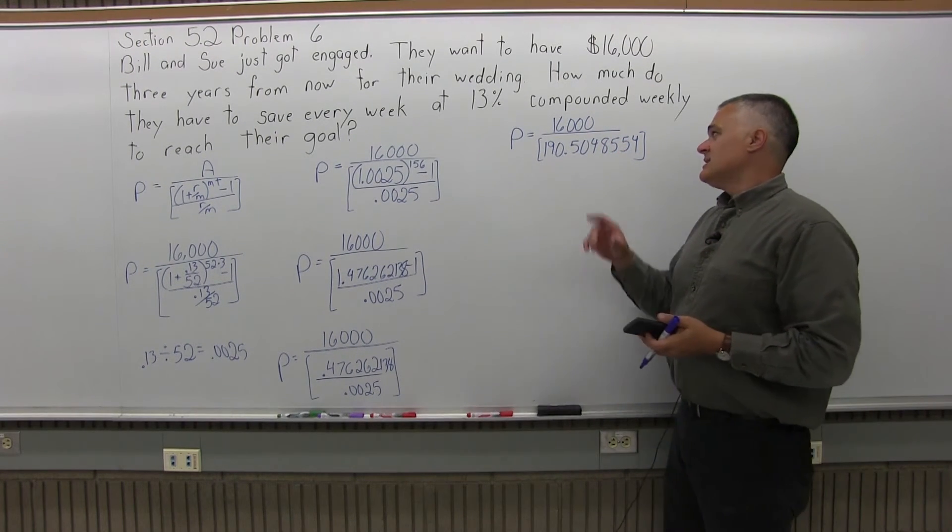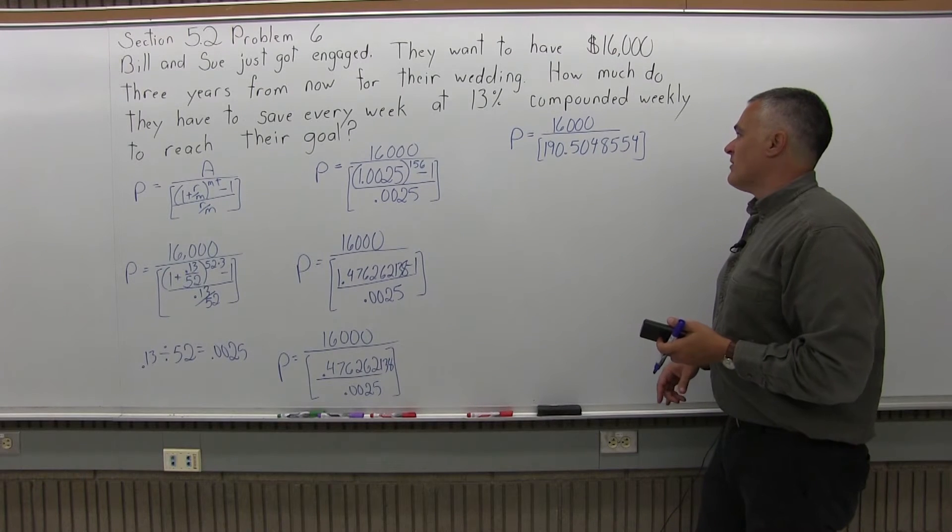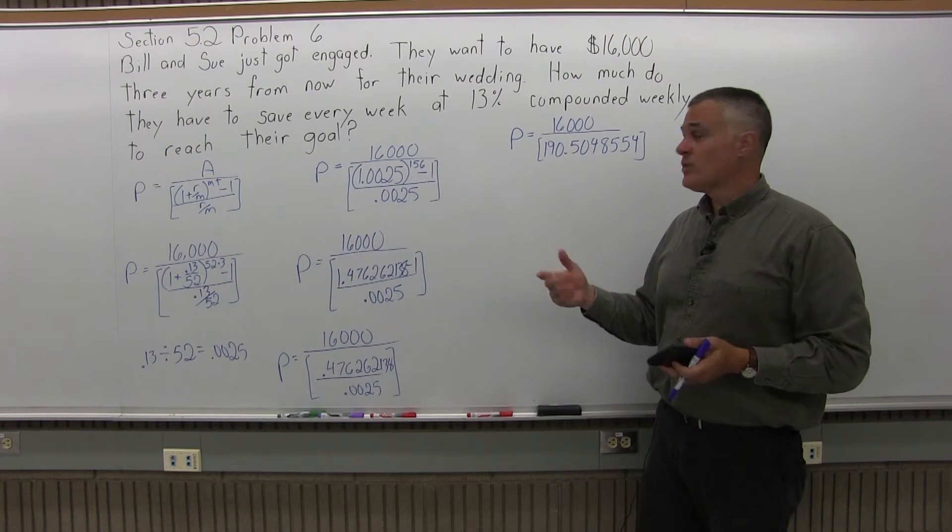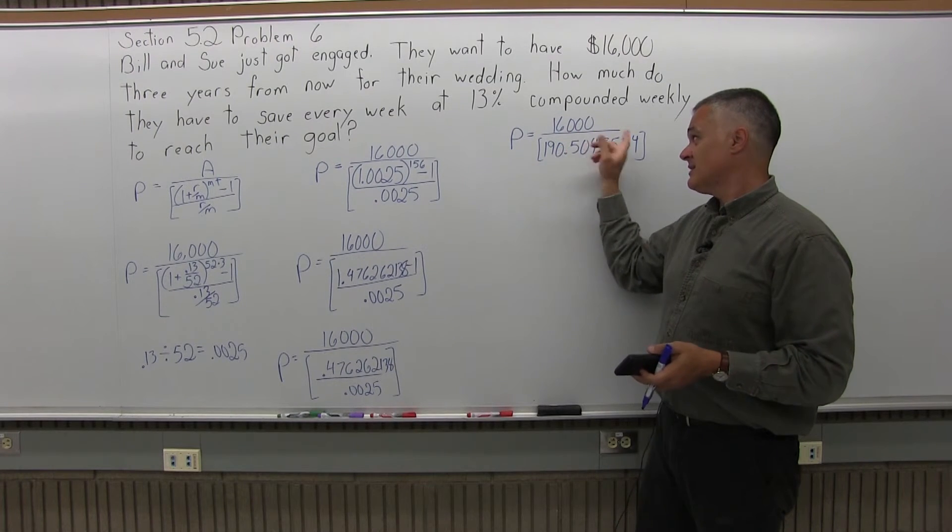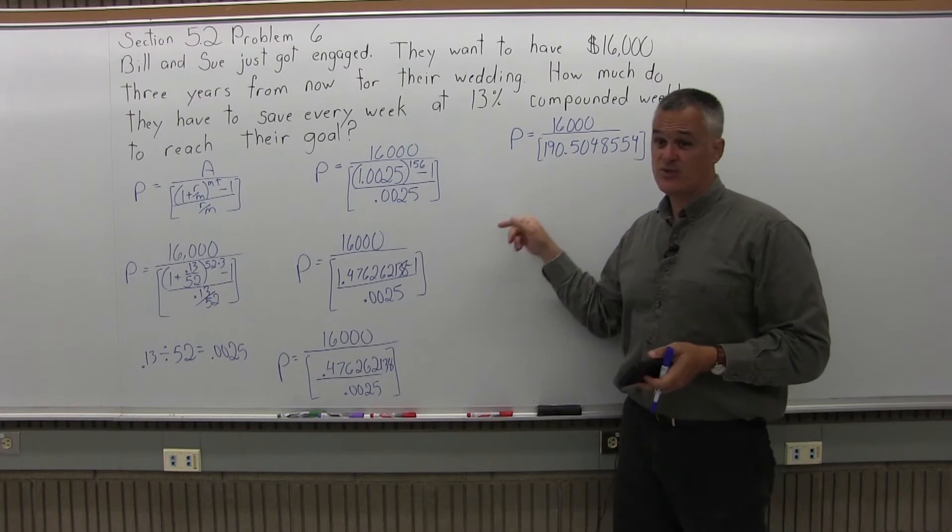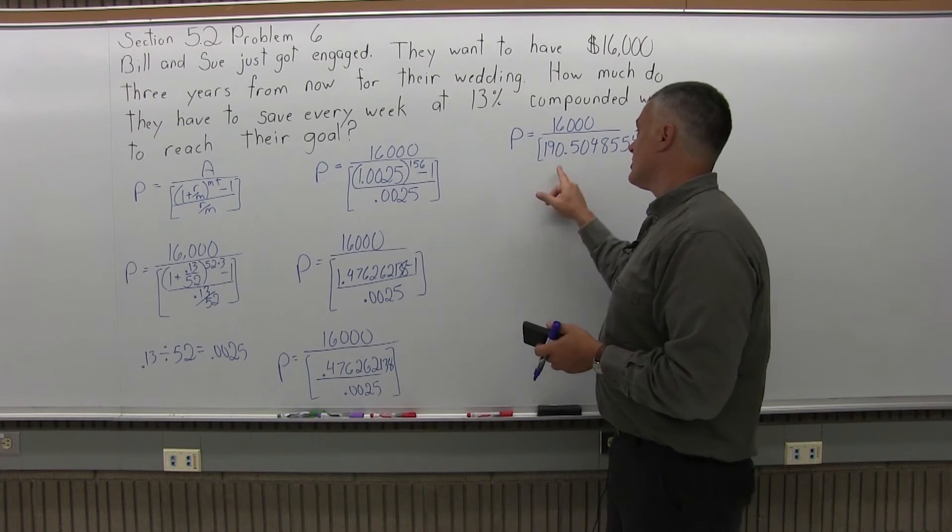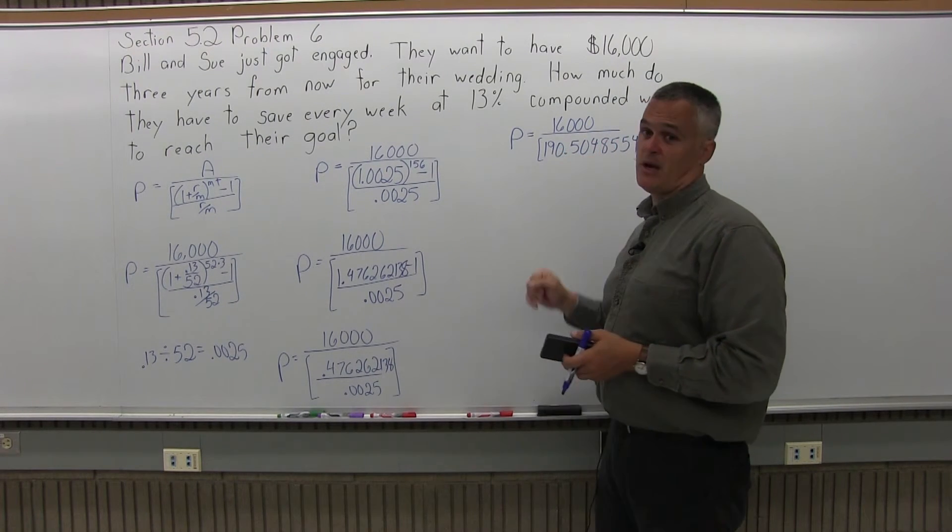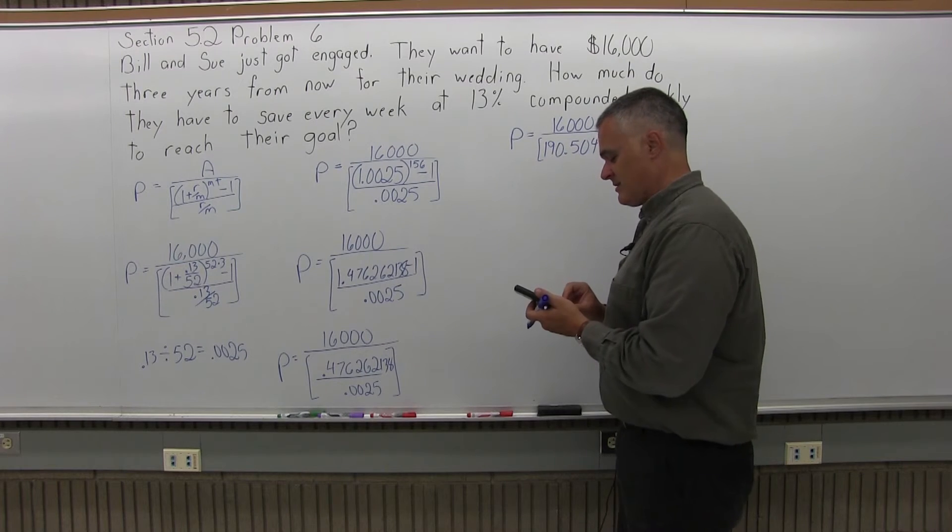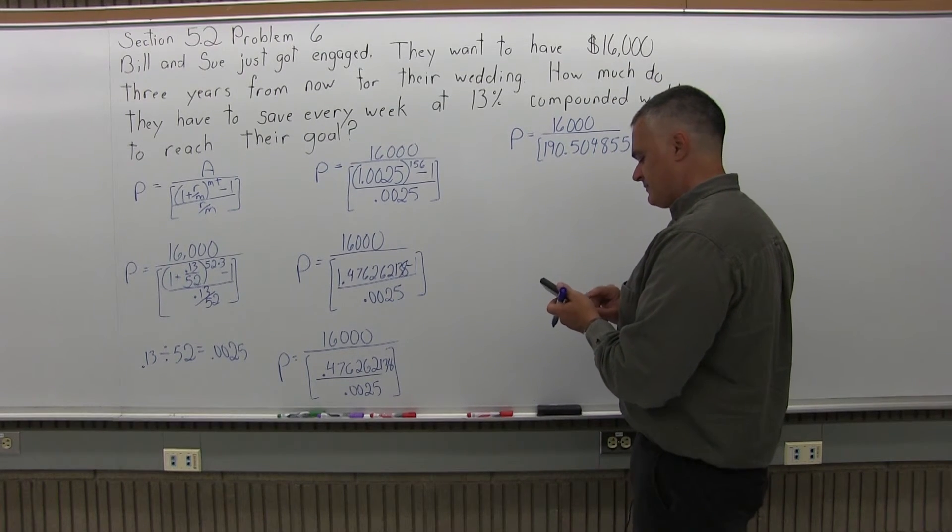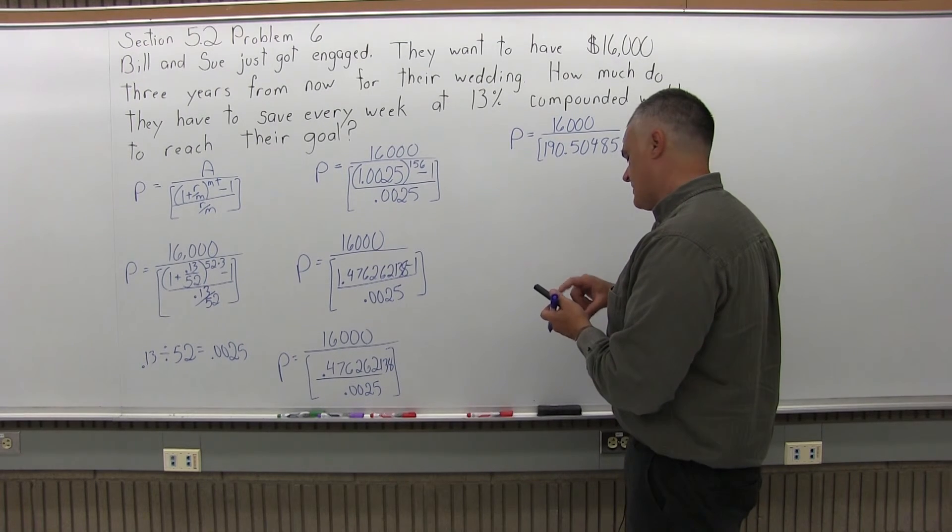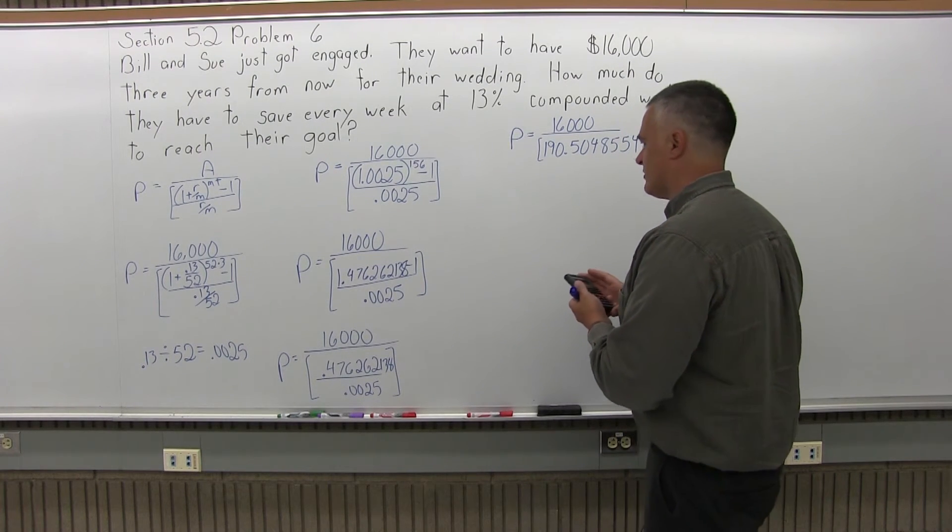Now to finish the problem, I do 16,000 divided by 190.5048554. Now the simplest way is just clear the screen and do 16,000 and enter that number that's on the screen right now. So you might want to just store it in memory before you clear it and just enter 16,000 divided by recall memory. It'll be a little bit easier. I like to save typing in if I can avoid it, so I'll do that.